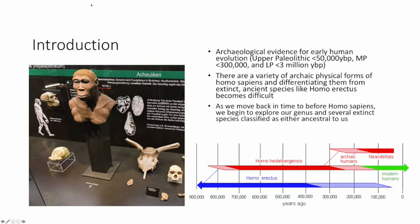We talked about the Upper Paleolithic, really from the development of agriculture back to 50,000 years before present. We talked about the Middle Paleolithic, from 50,000 years to 300,000 years before present. And then we talked about the Lower Paleolithic, which is from 300,000 years to 3 million years before present.